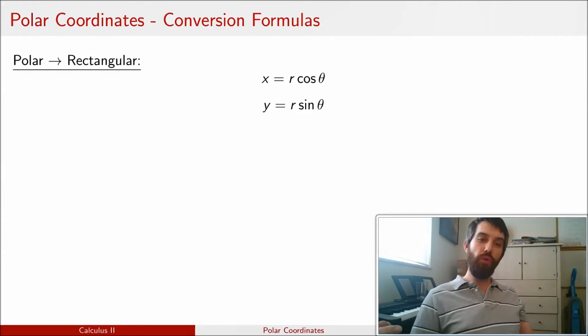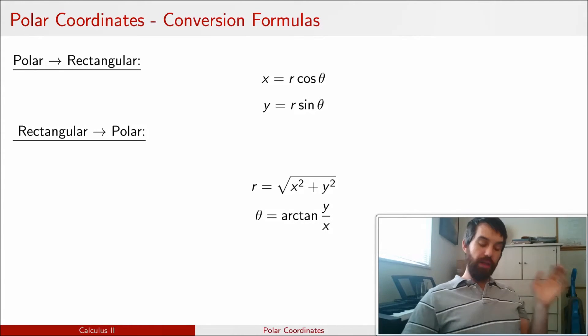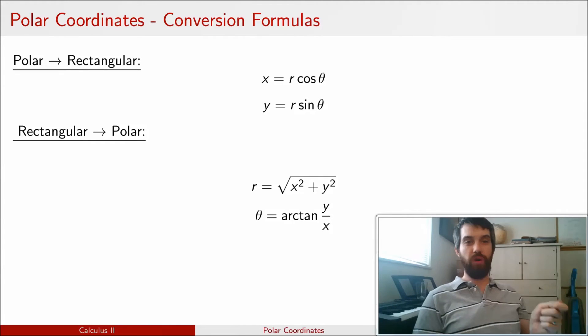But I can also go the other way around. I can use the Pythagorean identity, that cos squared plus sine squared is equal to 1, to give me that the radius is the square root of X squared plus Y squared.